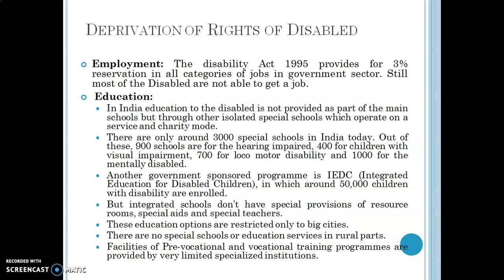These education options are restricted only to big cities — there are no special schools or education services for the disabled in small towns, backward areas, or rural and semi-urban areas. Children with disabilities residing in rural or backward areas are therefore not able to get any opportunity for education. Additionally, facilities for pre-vocational and vocational training programs — which are job-oriented and necessary to create employment opportunities — are provided by very few specialized institutions, leaving disabled people with limited employment prospects.